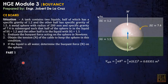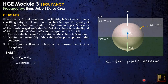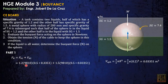The total buoyant force acting on the sphere is Fb1 plus Fb2, calculated using gamma of liquid times volume. The gamma of the upper liquid is SG 1.2 times gamma of water times 0.5 of the total volume, since only half the sphere is submerged in it. Then Fb2 is SG 1.5 times gamma of water times the other half of the sphere's volume.